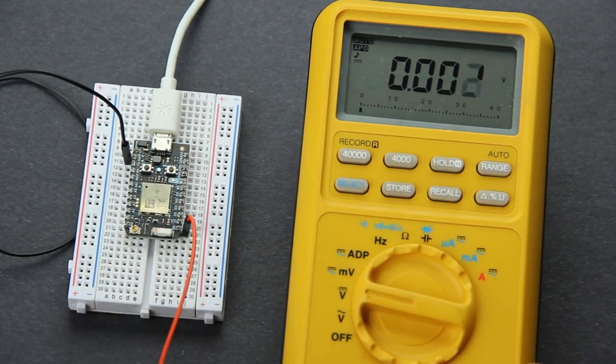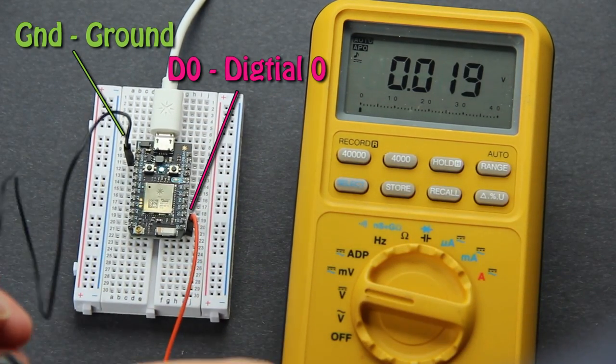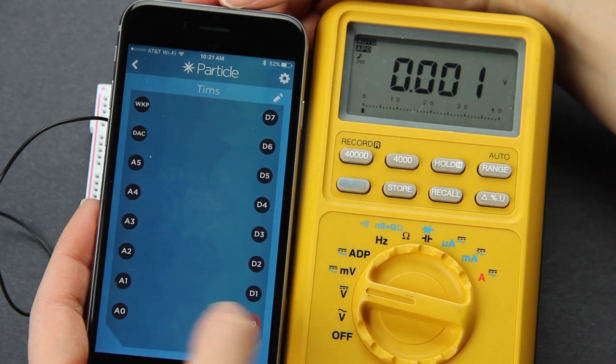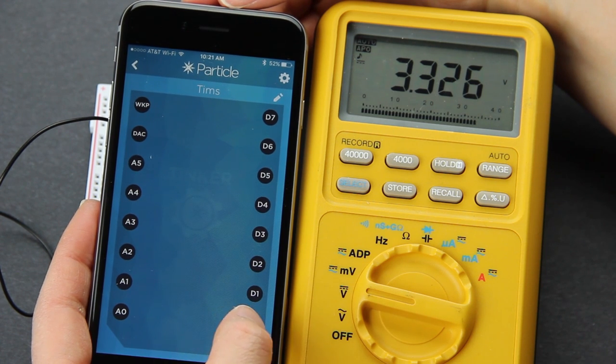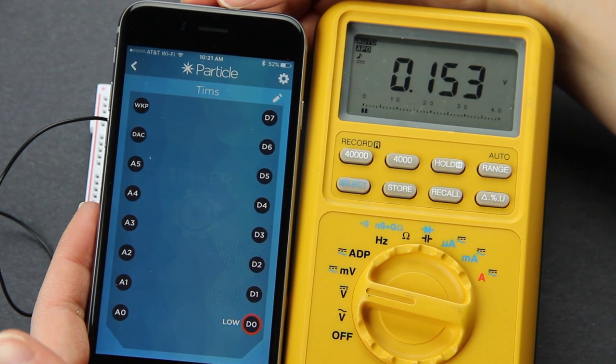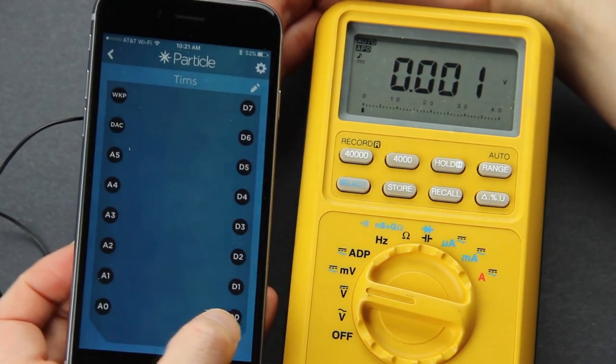We can connect one side of the multimeter to ground and the other to pin D0. If we choose digital write and pick high, you can see that the multimeter gets to about 3.3 volts, and if we switch it to low, it will drop back down to zero volts. This works for any of the other pins.